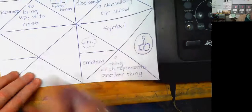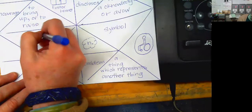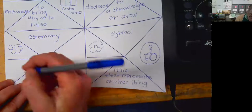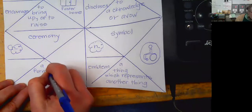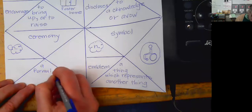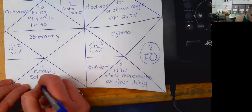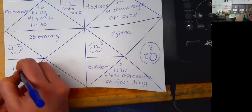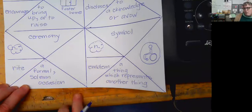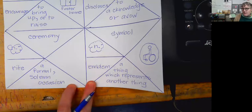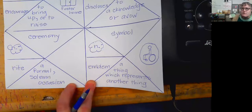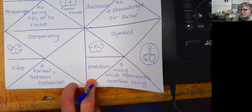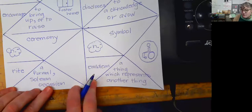Our next word is ceremony. And that's a noun. And ceremony is a formal solemn occasion. And synonym is rite. So when a service dog finally graduates and learns all the things that it needs to know to actually become a service dog, it completes all of the training. Sometimes they will have a ceremony, like a graduation ceremony for the dog and for the person who's going to get the service animal.